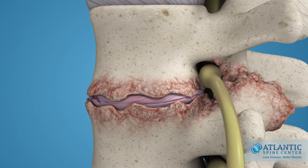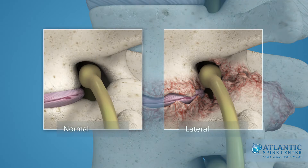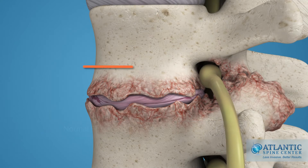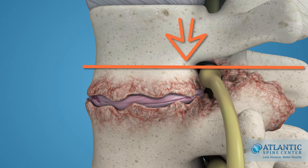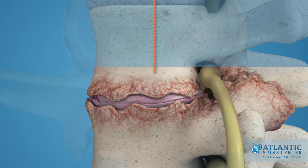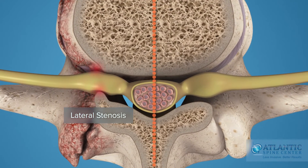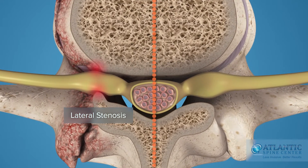This resultant loss of space in the foramen can cause squeezing or pinching of the nerve roots as they exit the spine. This condition is called lateral stenosis.